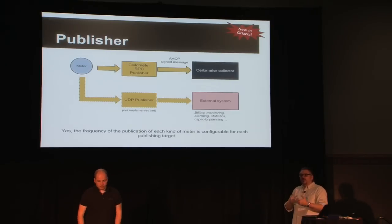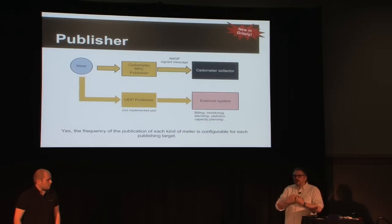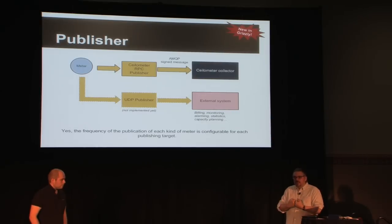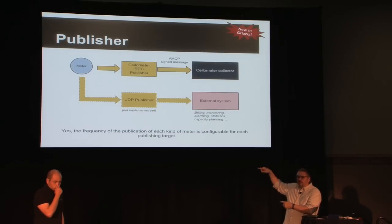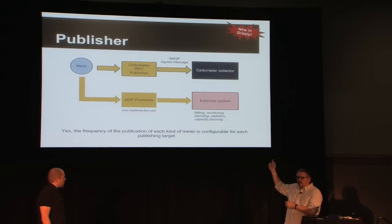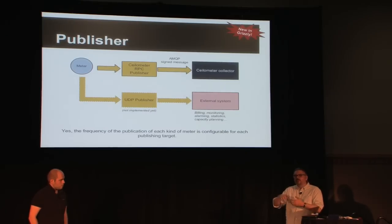For example, if you want to collect performance metrics, you need a sampling frequency of about every second. When doing metering for billing, you don't need data collected every second — it would be a waste of time and storage. However, with the mechanism of multiple frequencies, the ability to do transformations, and multiple publishers, we can have one collection mechanism with multiple destinations.